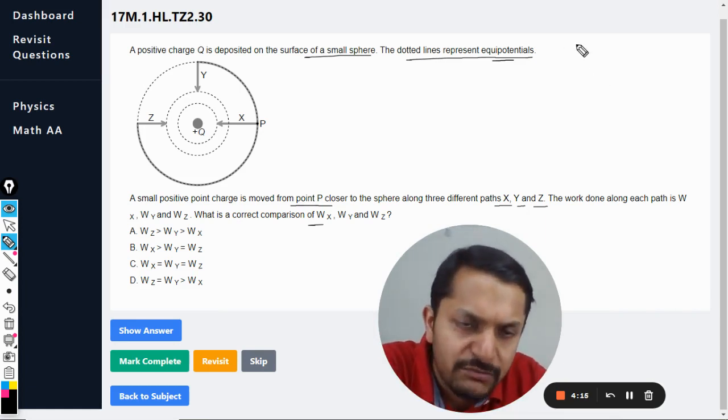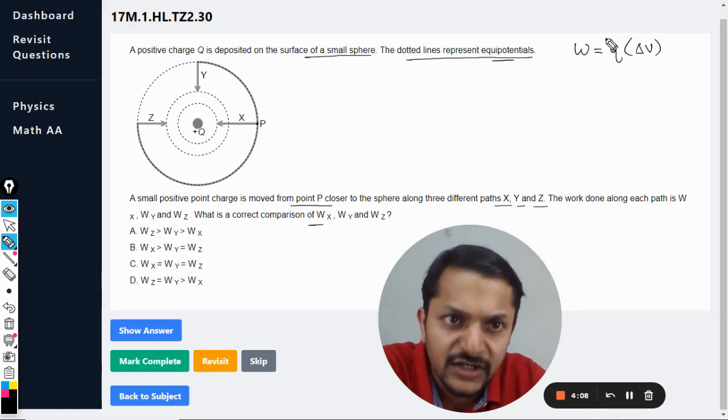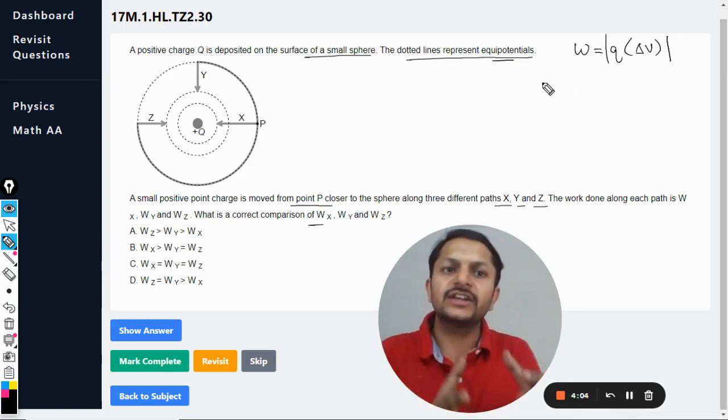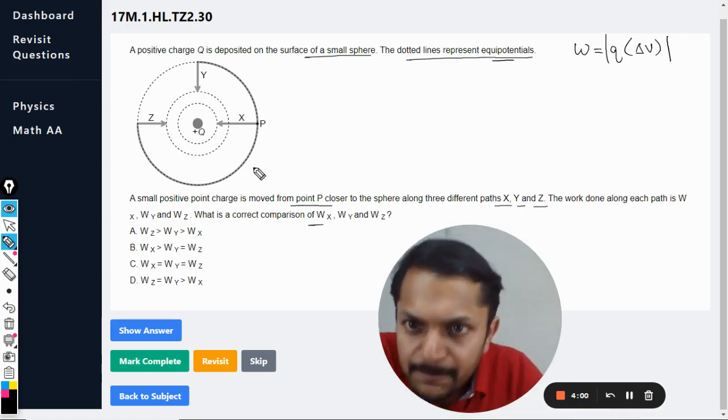First of all, in this question we must know that the formula for work done is Q into delta V. Definitely there is a negative sign here, but we are only concerned with the magnitude, so the work is equal to Q into delta V. So let's find this.